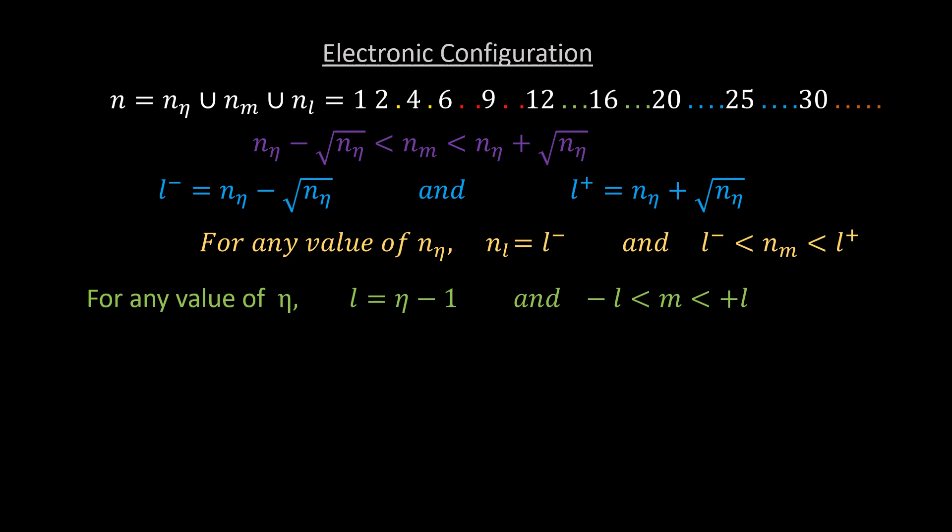Example. Let's take, for example, n eta equal to 16, which corresponds to eta equal to 4. nl is equal to 12, which corresponds to l equal to 3. nm is equal to 13, 14, 15, dash 17, 18, 19, which corresponds to m equal to minus 3, minus 2, minus 1, 0, 1, 2, 3. That is, m lies between minus l and plus l.